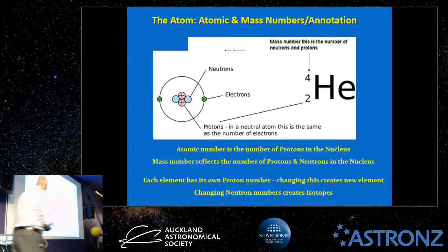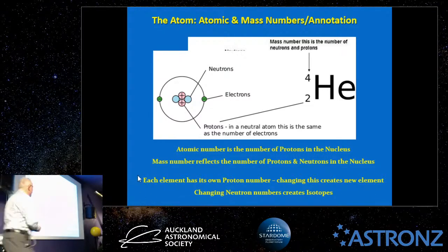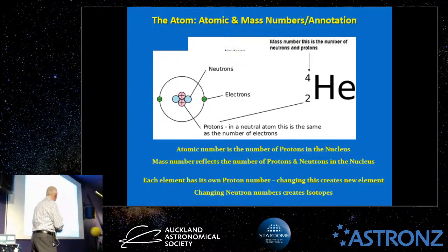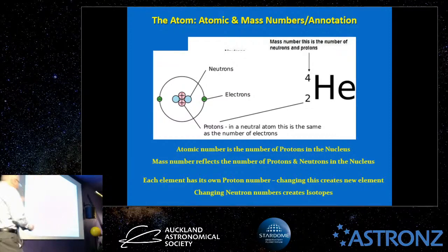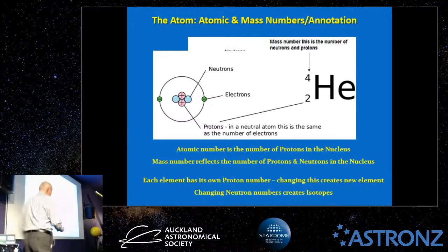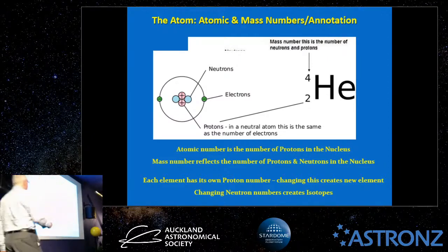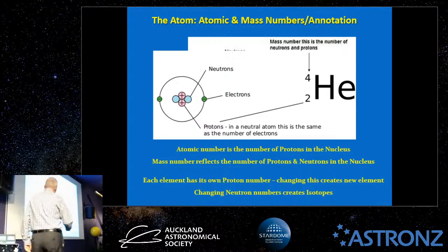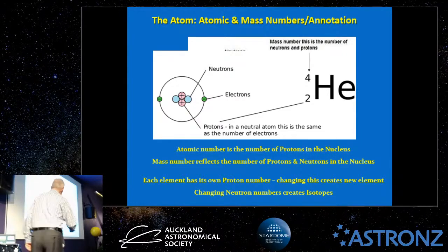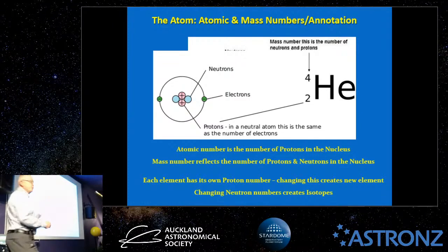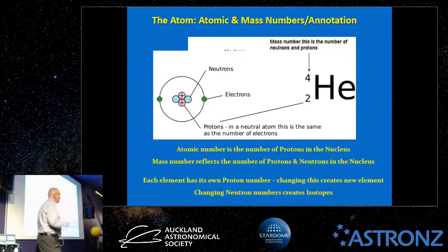Each element has its own proton number, so changing the proton number in an atom creates a new element — that's the key message. If there's one thing to take home: your element is always dictated by how many protons are in the nucleus. Changing the neutron number creates isotopes — same element, different number of neutrons. Change the protons and you have a completely different element.